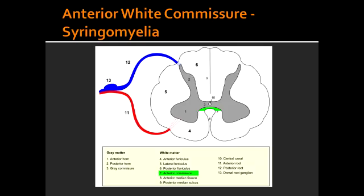What area of the spinal cord is damaged when the syrinx expands? When the syrinx expands, it damages the anterior white commissure of the spinothalamic tract, damaging the second-order neurons of the spinothalamic tract, and therefore leads to a bilateral loss of pain and temperature sensation. This all occurs usually at the level of C8 to T1.